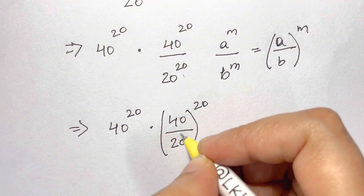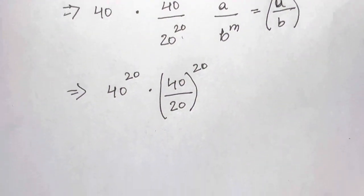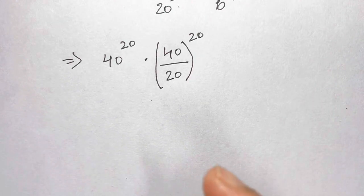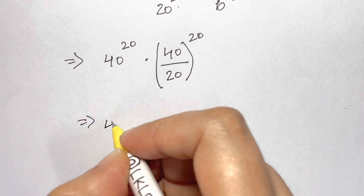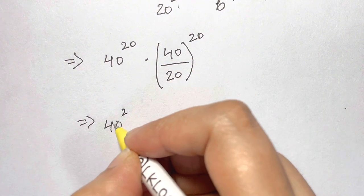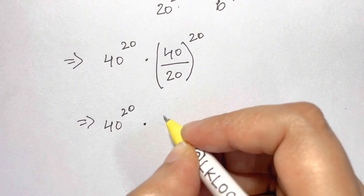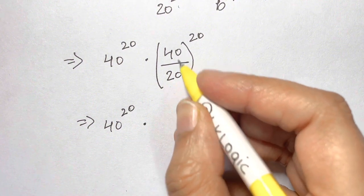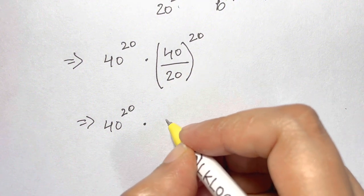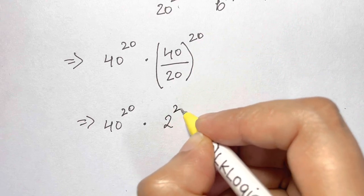Now, 40 divided by 20 is 2, so we write that as 40 raised to 20, times 2 to the power of 20.